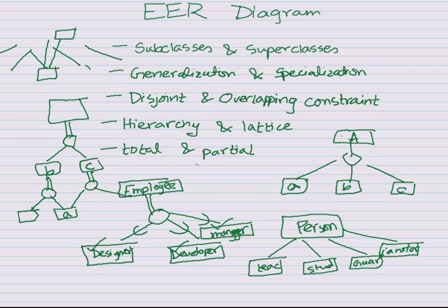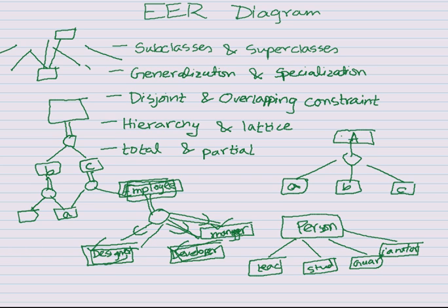Specialization is mostly a top-down approach because we start with one entity and specialize it to find small individual subclasses. Generalization is a bottom-up approach — we start from the common subclasses and then generalize them into one superclass.